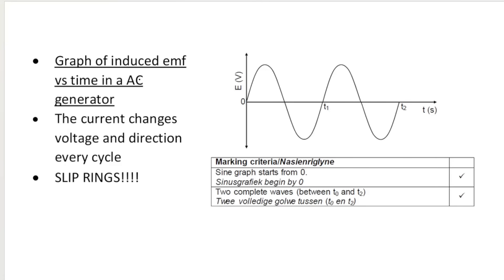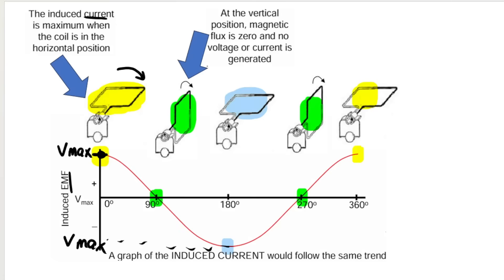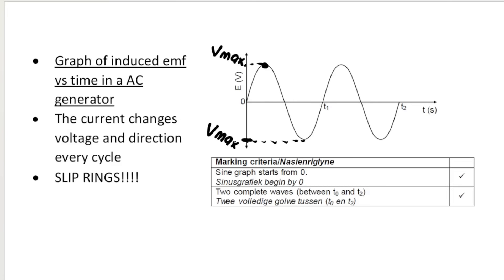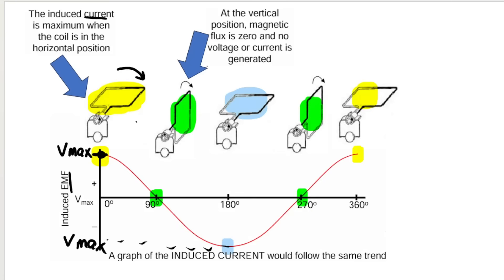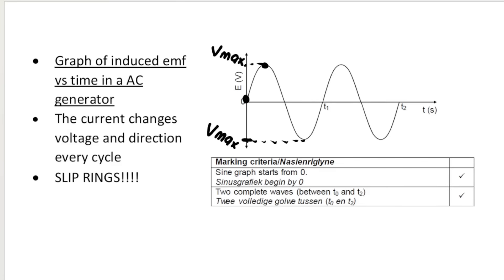Here's another version of the same AC generator graph. We know it's AC because it reaches a maximum in one direction — that would be Vmax — and also reaches a maximum in the opposite, negative direction — also Vmax, but negative. The number of waves depends on how many rotations are done and where we start the graph. The only reason one graph looks like a cosine graph and another looks like a sine graph is because it depends on where we start the rotation. If we start in a horizontal position, we begin with maximum voltage.